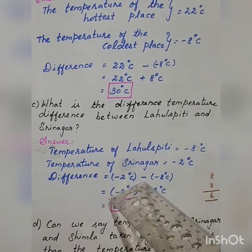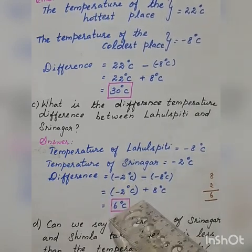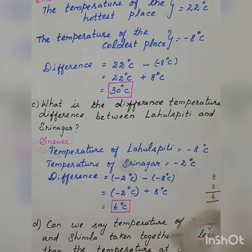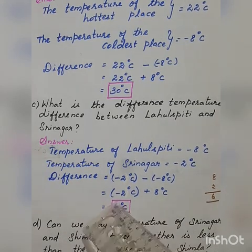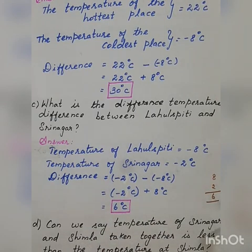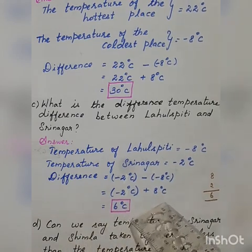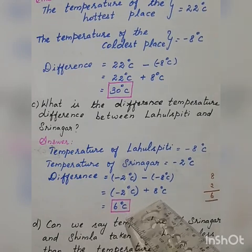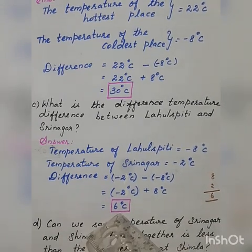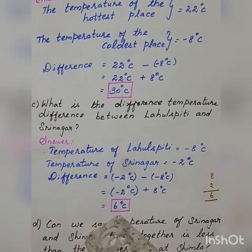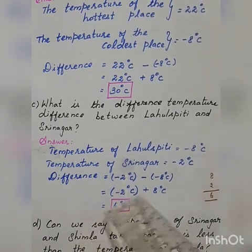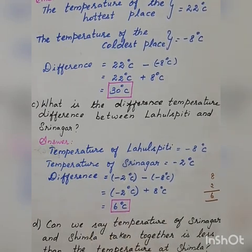The subtraction sign in between changes to addition sign, and the second number — minus 8 degree Celsius — its additive inverse of minus 8 is plus 8, so plus 8 degree Celsius. Now one positive and one negative — subtract the numbers: 8 minus 2, the answer is 6. The biggest integer is 8, which is a positive integer, so we put the positive sign. The answer is 6 degree Celsius — we simply write 6 degree Celsius.